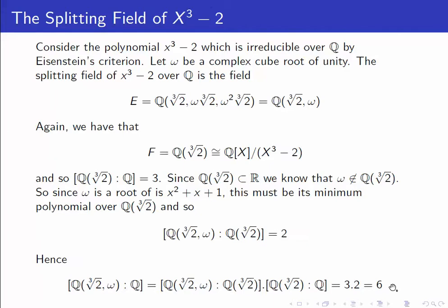So this is the typical example of that first case where the splitting field has degree 6 over Q. Now let's have a look at an example where the opposite happens.